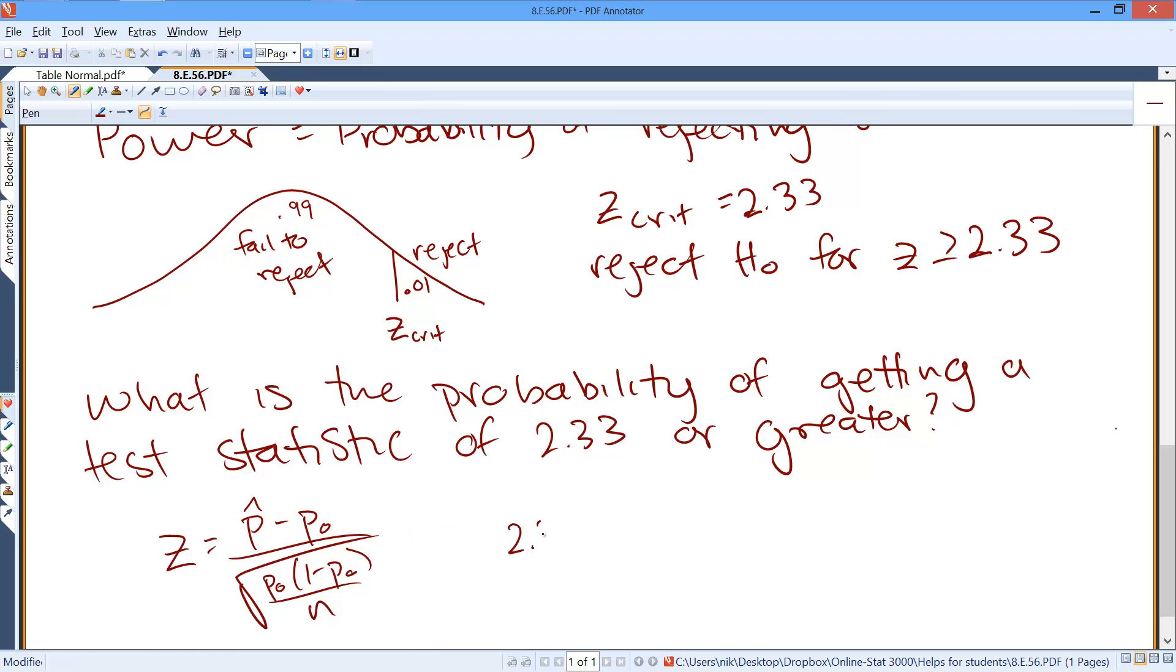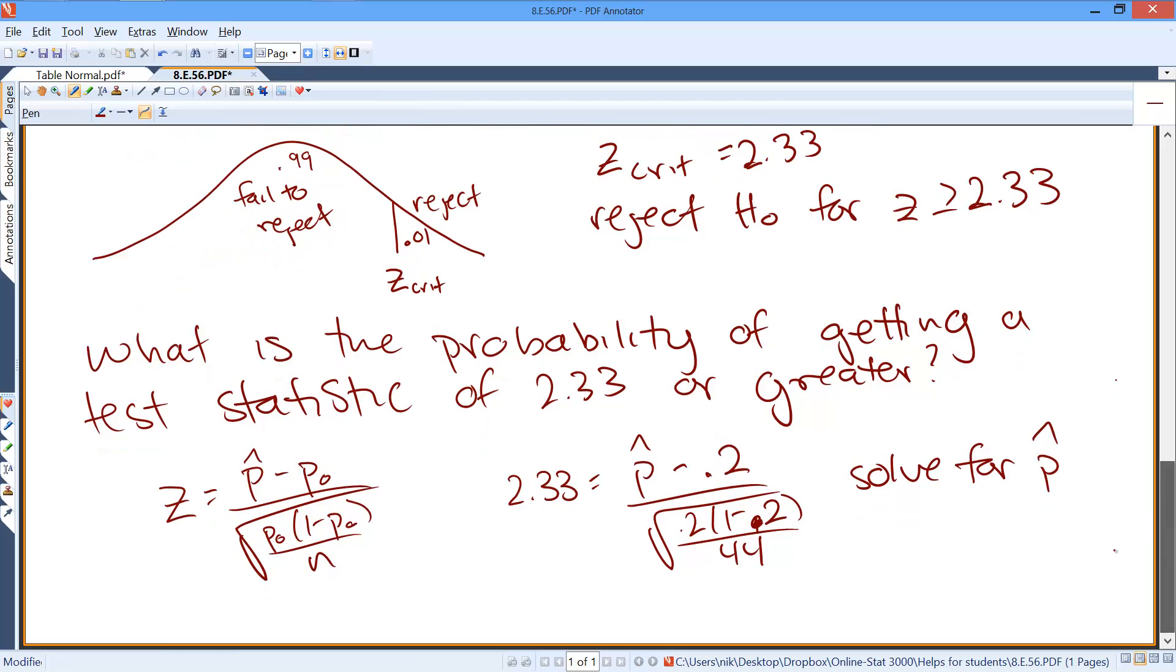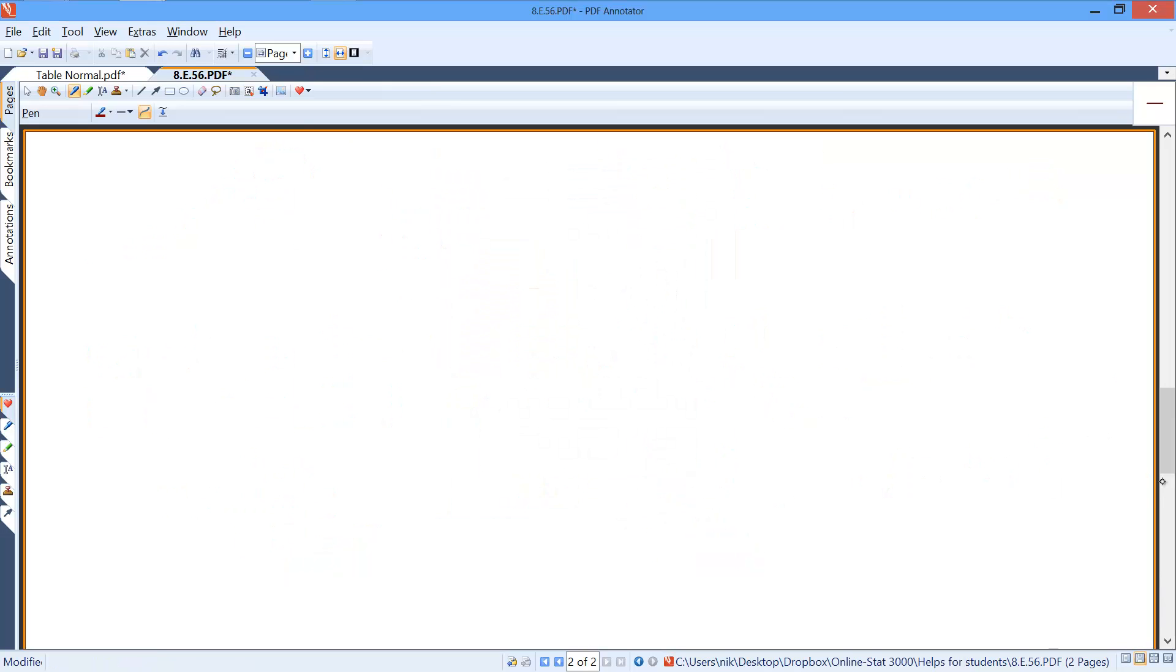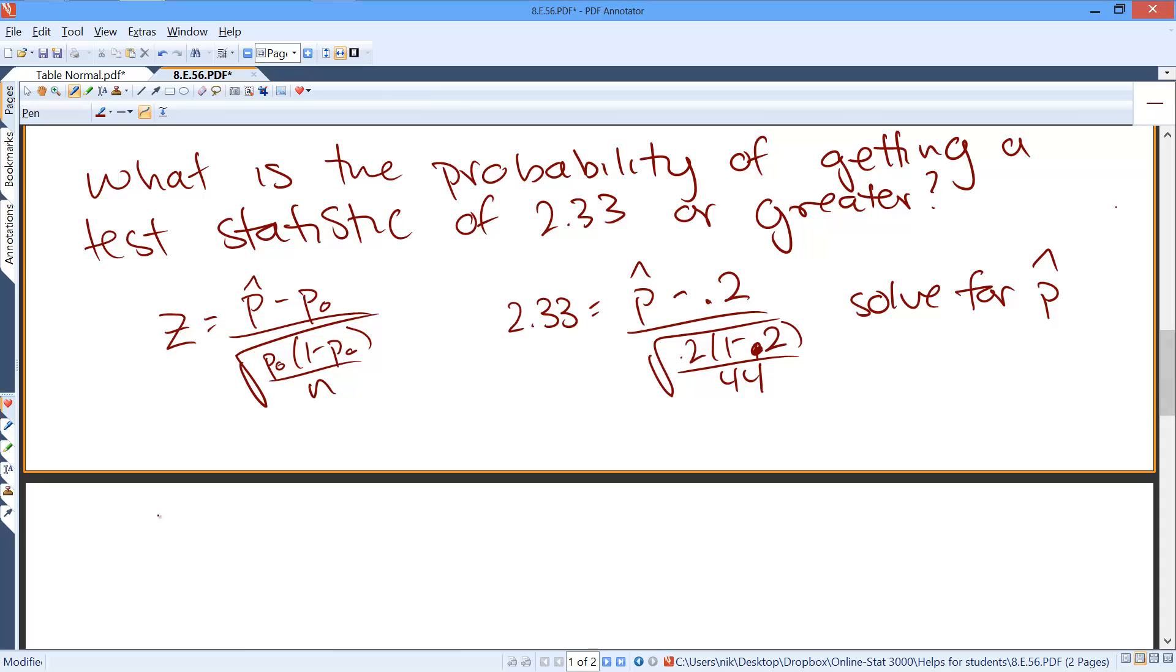We're still looking for our test statistic, which will still be found this way. So if we're rejecting at 2.33, which is an unknown p-hat minus the hypothesized value of 0.2, over the square root of 0.2 times 1 minus 0.2 over 44, and solve for p-hat, we get p-hat equals 0.34.